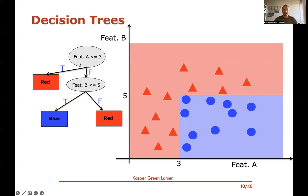The corresponding decision tree starts at the root by asking: is feature a ≤ 3? If yes, all training data in that region is red, so we return red. Otherwise, we're to the right of that vertical line, and we ask: is feature b ≤ 5? If true, we return blue; otherwise red. This decision tree perfectly classifies the non-linearly separable data.